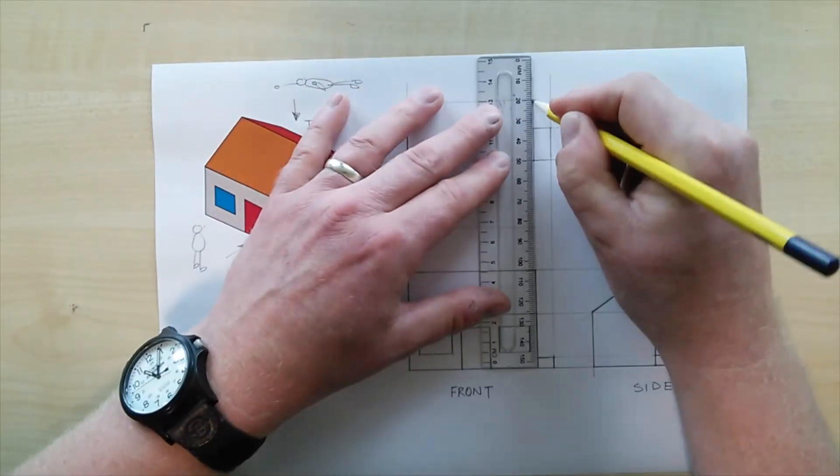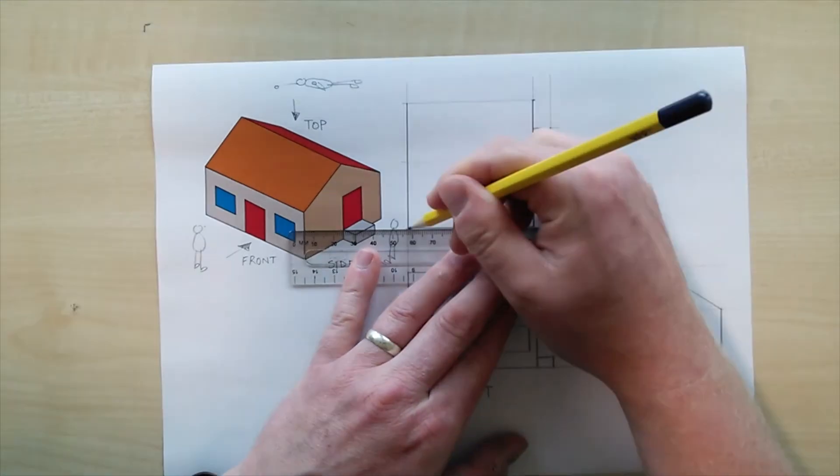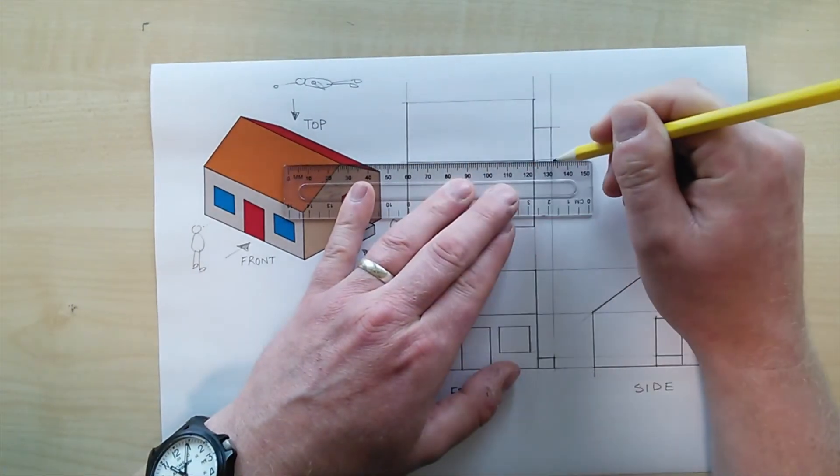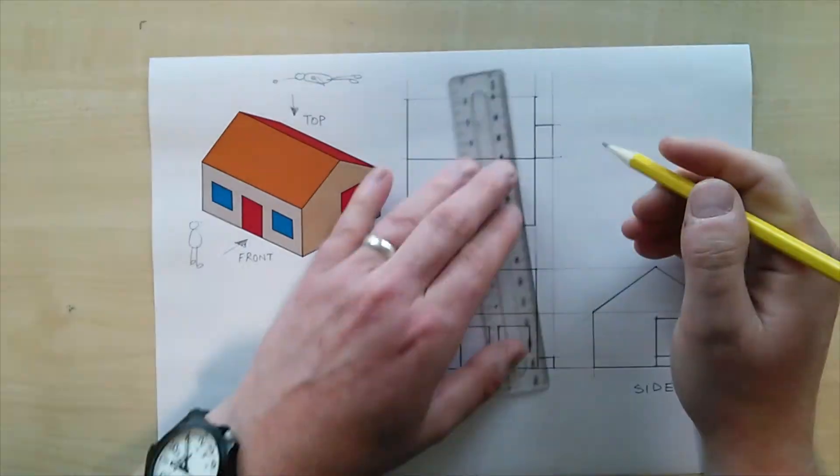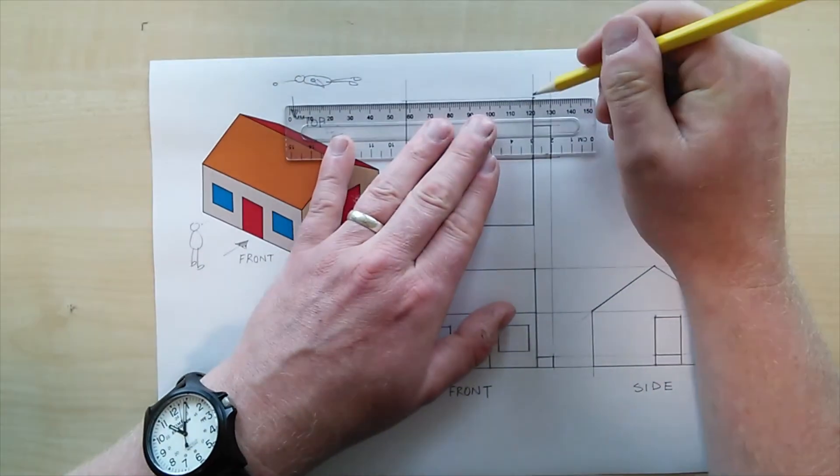And now we get to the stage where we're going ahead and all those visible edges, all the edges that we'd be able to see and touch, become darker and blacker and turned into outlines.